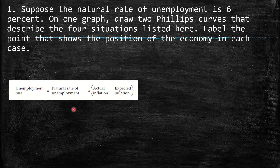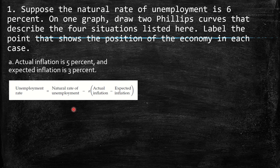The first question says: suppose the natural rate of unemployment is 6%. On one graph, draw two Phillips curves that describe the four situations listed here. Label the point that shows the position of the economy in each case. First, actual inflation is 5% and expected inflation is 3%. In this situation, we have a gap between actual inflation and expected inflation. As a consequence, the unemployment rate is lower than the natural rate of unemployment.